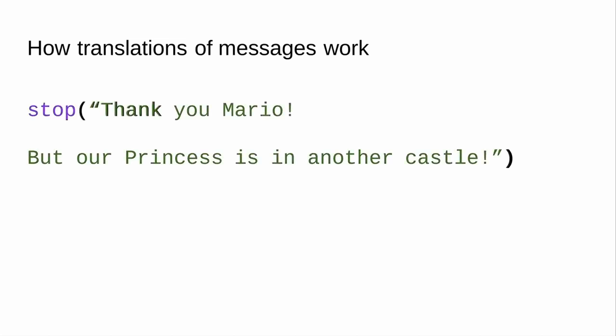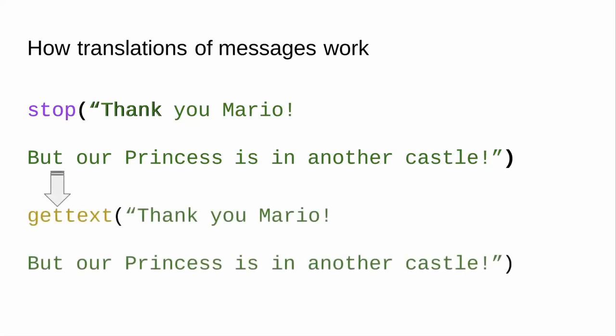Two key components here are the messaging function — which is stop — and the message itself, which is the string. There's a small set of functions recognized by R as producing messages for translation. The three you'll use almost all the time are stop, warning, and message. By default, any string that appears in them literally would be eligible to be extracted into a message for translation. Stop, warning, and message all under the hood call gettext, which is really the workhorse behind all translations.